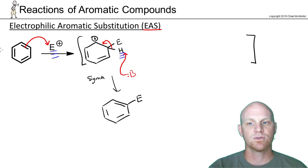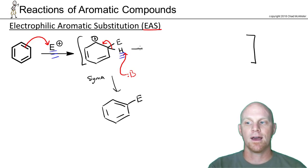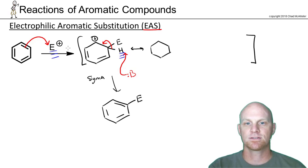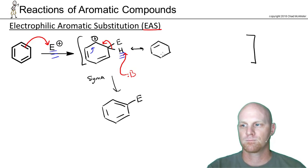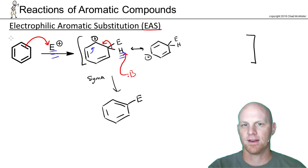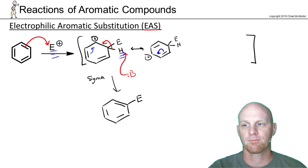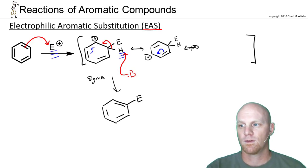Just two steps: nucleophilic attack followed by proton transfer. Drawing out the resonance structures — we have a resonance-stabilized carbocation. We can move these electrons, putting the carbocation at one position, then move these electrons again to get one more additional location.